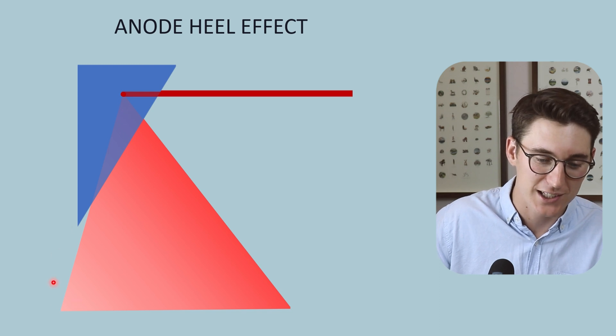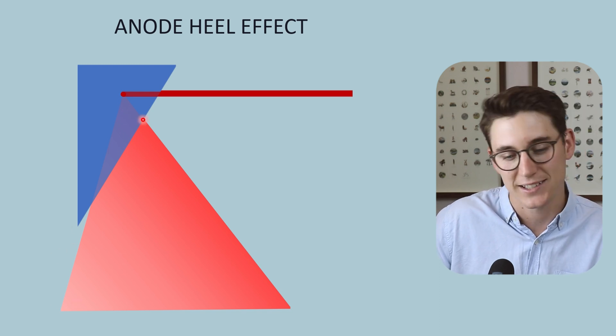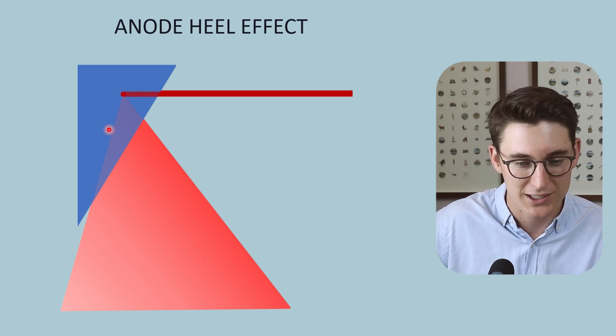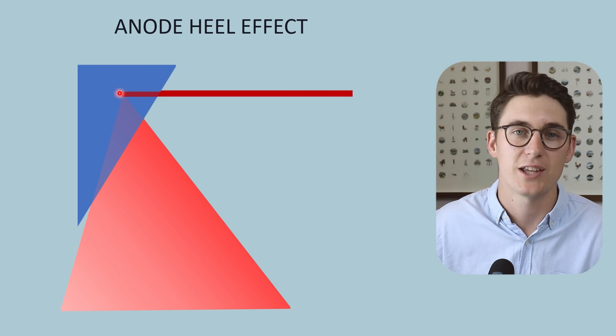The intensity of these x-rays leaving the anode is less than the intensity of those on the cathode side of our field. And that's simply due to the distance that they have to travel through the anode.